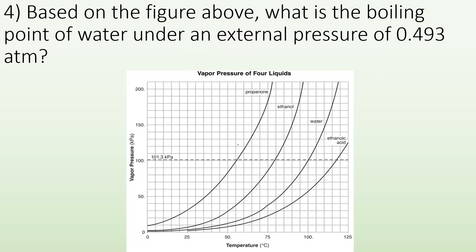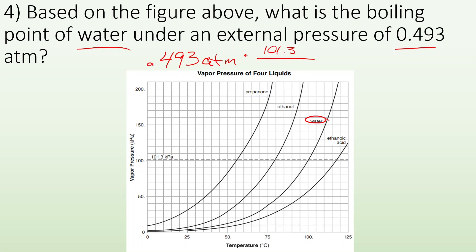What about this one? Based on the figure, what is the boiling point of water under an external pressure of 0.493 atmospheres? I have to convert 0.493 atmospheres to kilopascals: 0.493 atmospheres times 101.3 kilopascals per 1 atmosphere, and I get roughly 50 kilopascals.